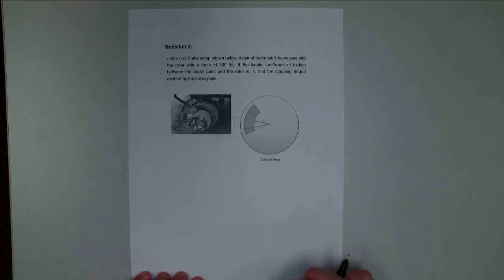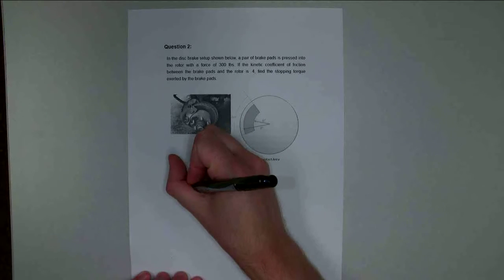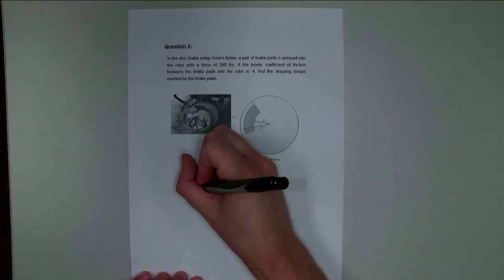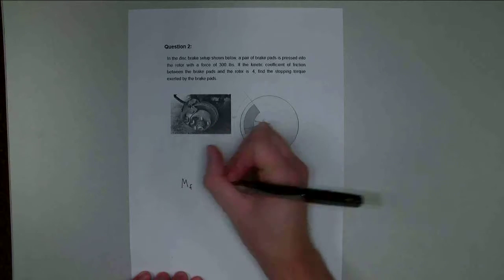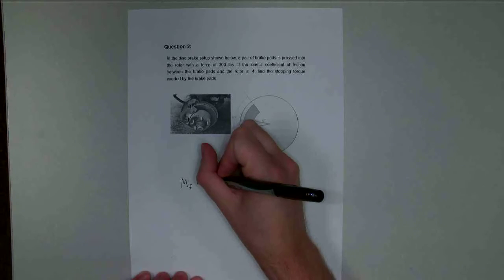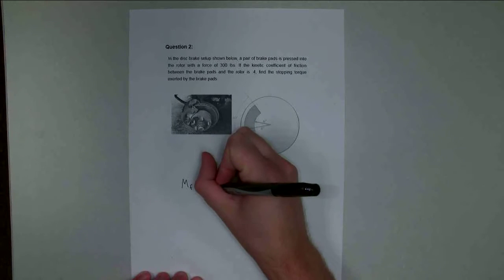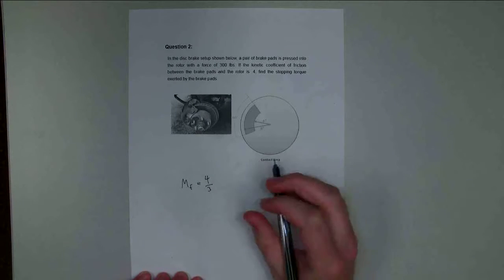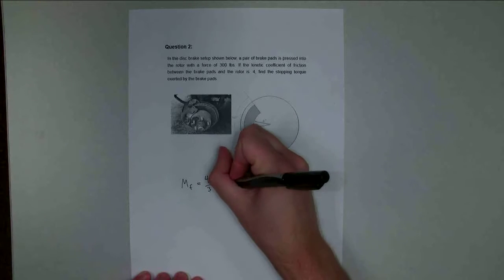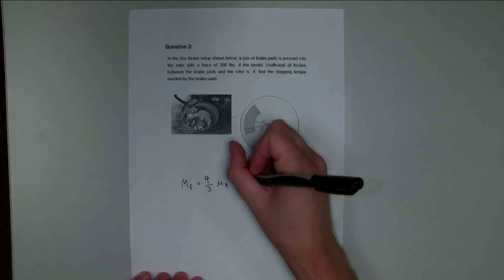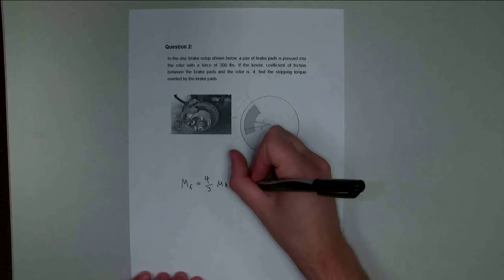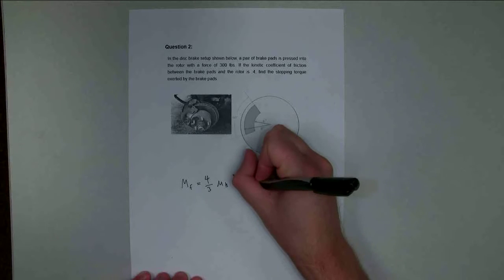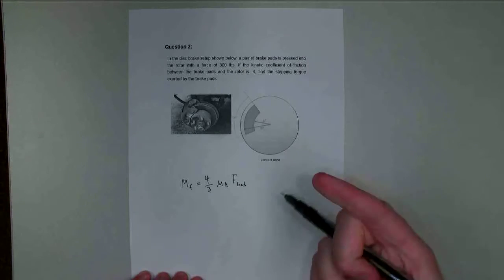We're going to use our equation. The moment due to the friction force is going to be equal to four-thirds—and it's four-thirds because it's two of them—times the kinetic coefficient of friction times the load force, and that's the 300 pounds that we're pinching down on the rotor with.